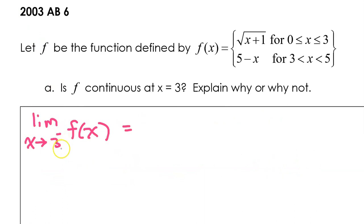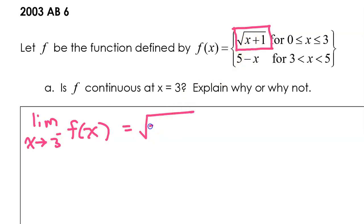Let's start with the limit as x approaches 3 from the left. From the left, the function is defined by the square root of x plus 1. So this limit we can find by direct substitution. Substituting 3 for x gives us the square root of 3 plus 1, which is equal to the square root of 4, which is just 2.